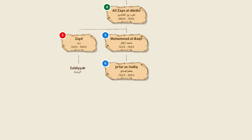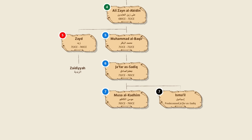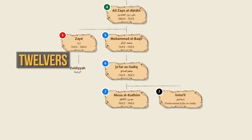Jafar as-Sadiq was also a renowned transmitter of hadiths, and many scientific works are attributed to him as well. His death in 765 created yet another schism. It is said that during his lifetime, he had declared his son Ismail to be his successor. However, Ismail died during his lifetime, raising a question over the succession. Many believed the successor should now be his other son, Musa, but others believed the Imam was infallible and therefore the succession should pass from Ismail to Ismail's descendants. Those who followed Musa, later known as Musa al-Kadhim, became known as Twelvers, whereas the followers of Ismail and his son Muhammad are known as the Ismailis.